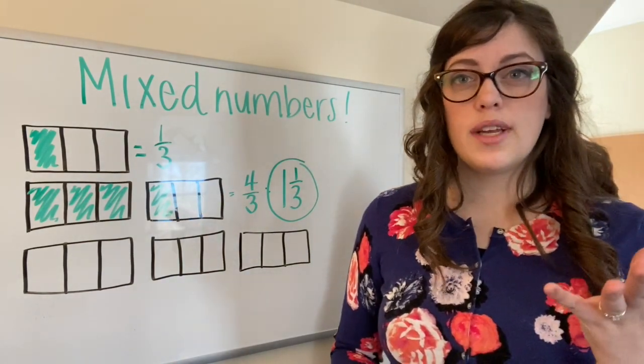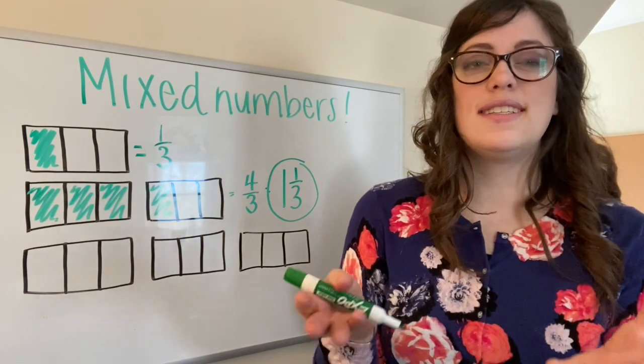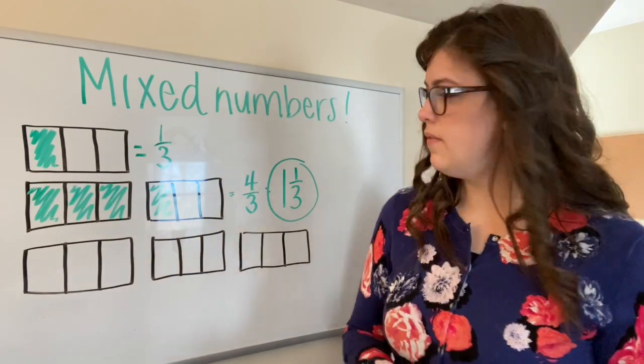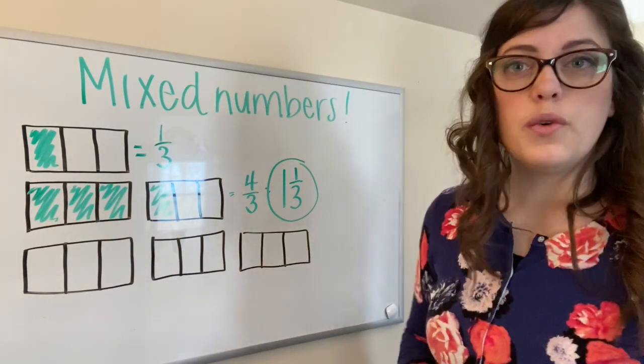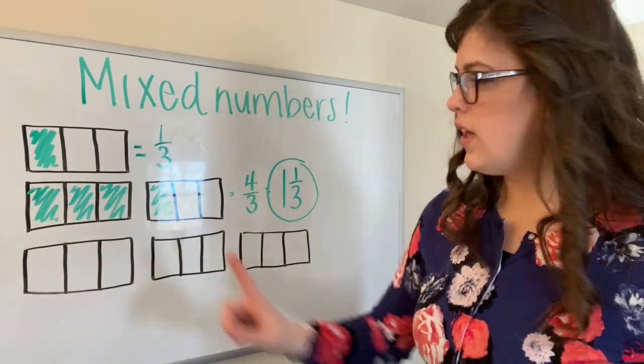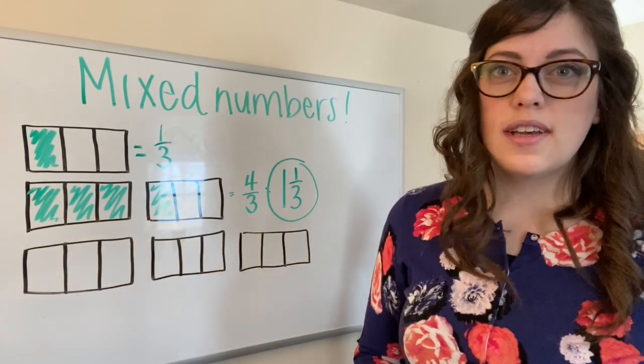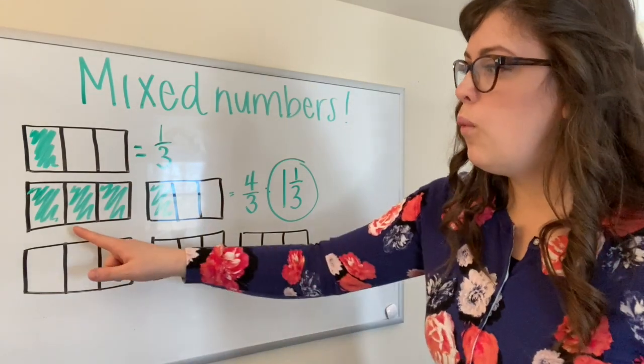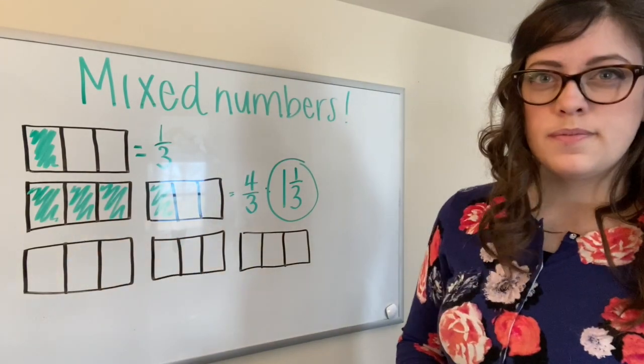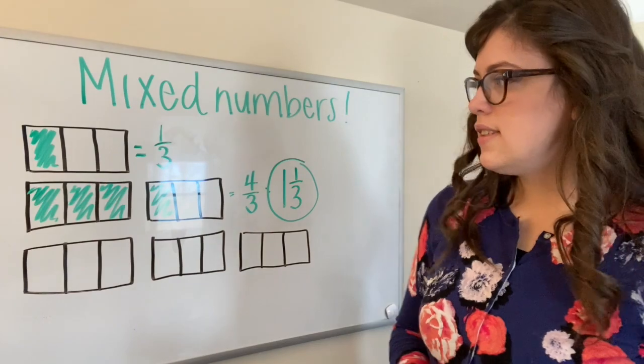It's when we combine whole numbers with fractions to give us a complete number. This is equal to four thirds. We can see that in our diagram. I colored in four thirds. I could also say I colored in one whole and one third. Let's look at our next example.